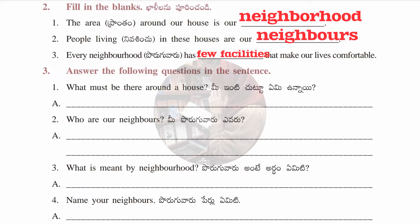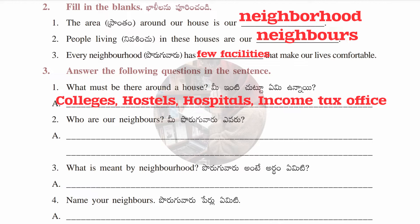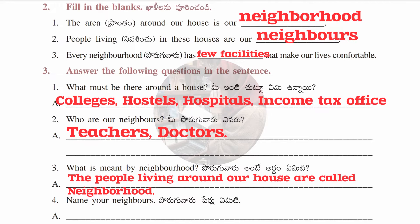The third section has question and answers. First question: what must be there around a house? Answer: colleges, hostels, hospitals, income tax offices. Second: who are our neighbors? Answer: teachers, doctors. Third: what is meant by neighborhood? Answer: the people living around our house. Fourth: name your neighbors — answer: Ravi, Jyoti, and Karan. You can write your own neighbors' names.